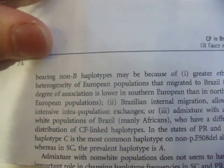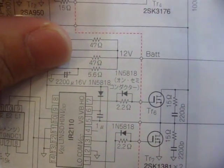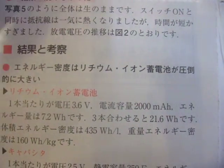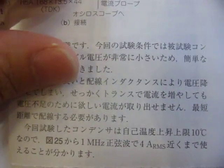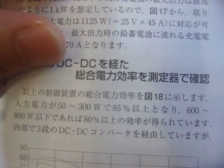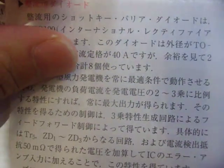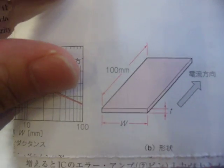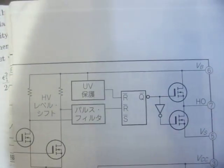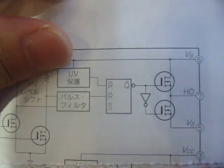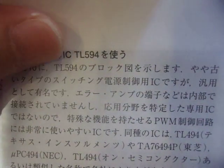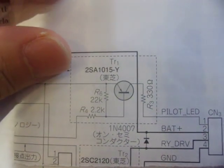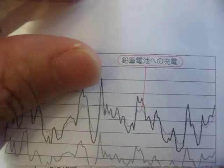We propose that this matrix element between states, via the state-operator correspondence, maps to the correlation function of the corresponding operator. The matrix element between states would include an insertion into the light-cone Hamiltonian. Such objects would be related to the correlation function of the corresponding operators, weighted by the sum of the first two dimensions minus the third dimension.